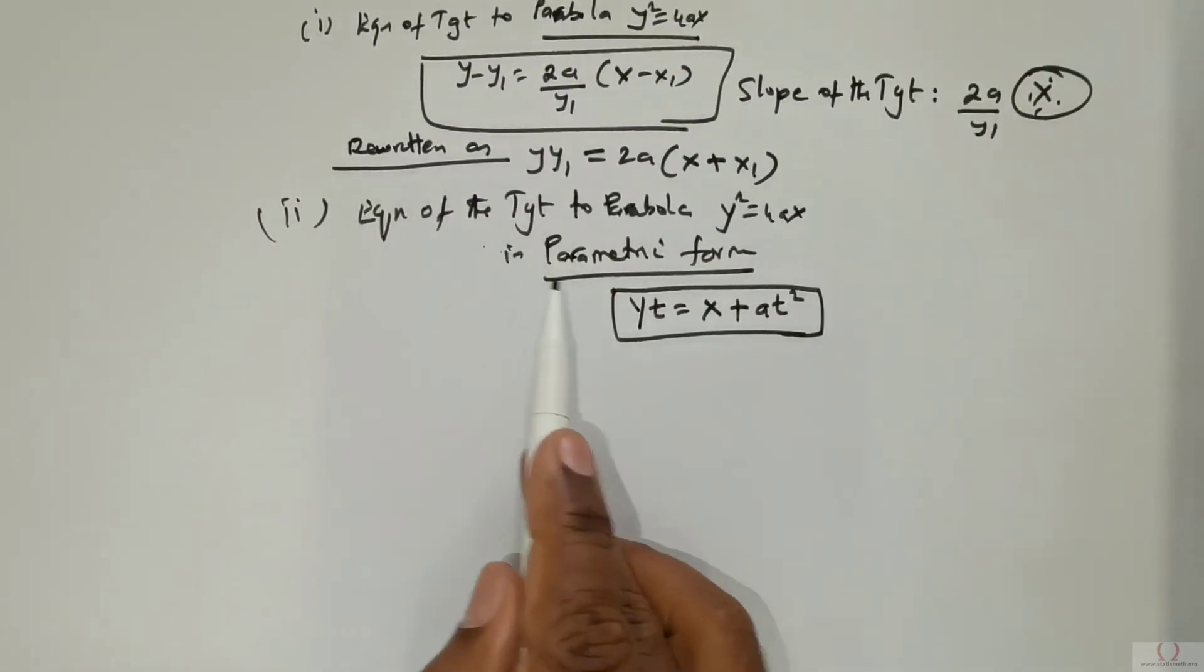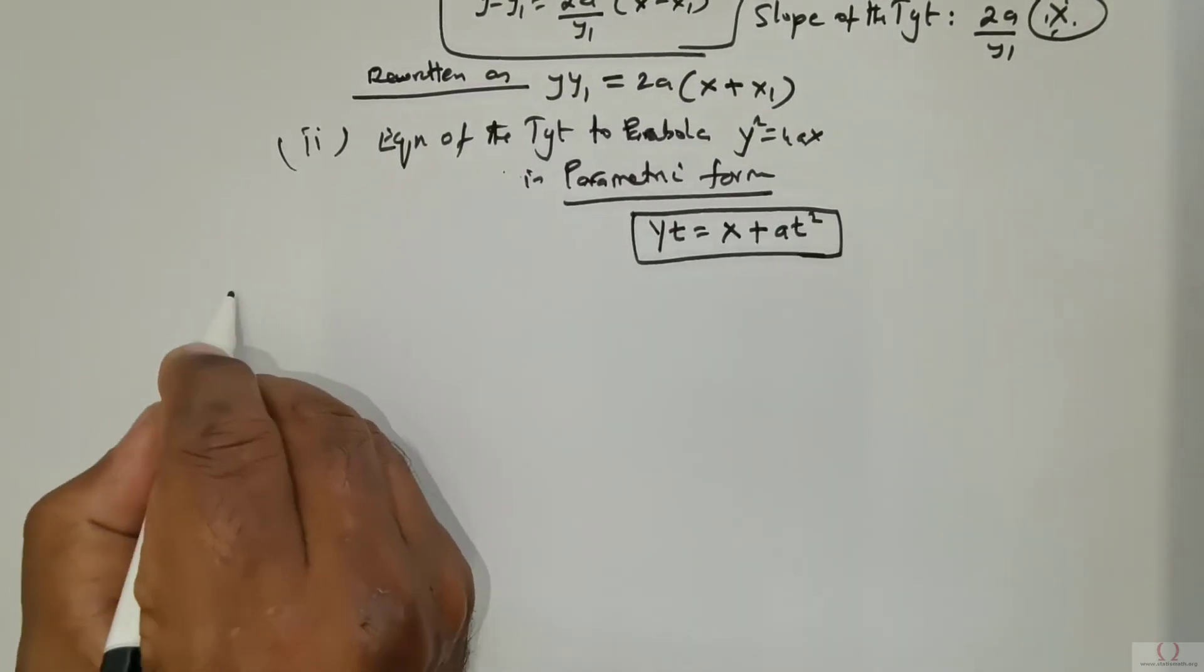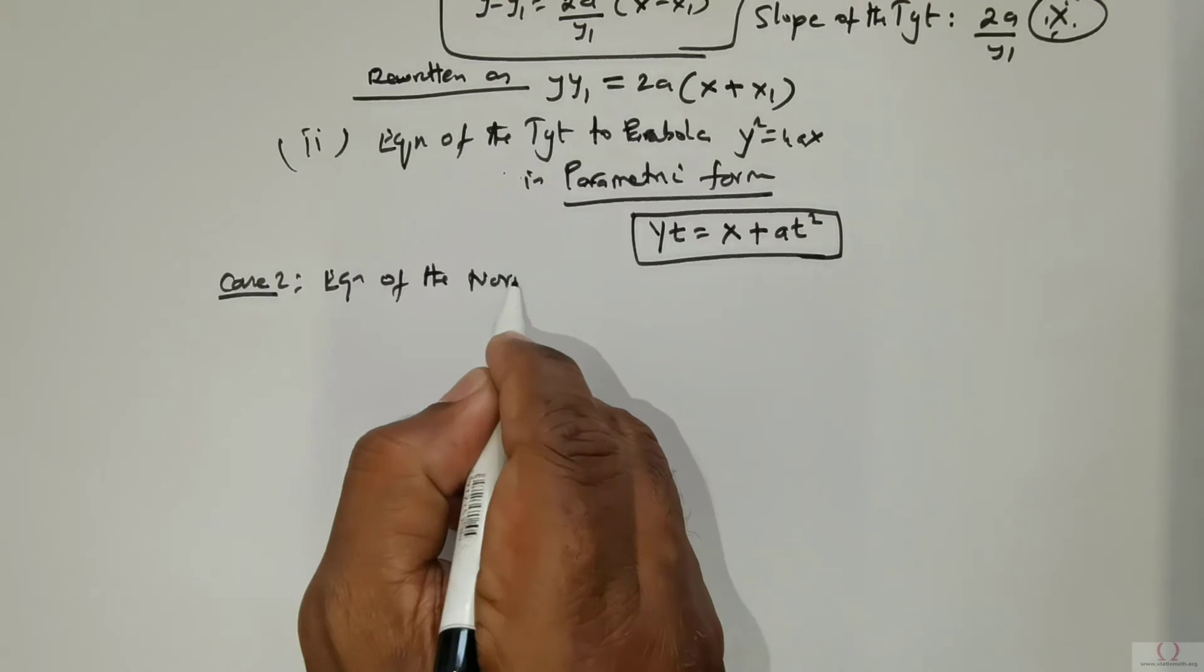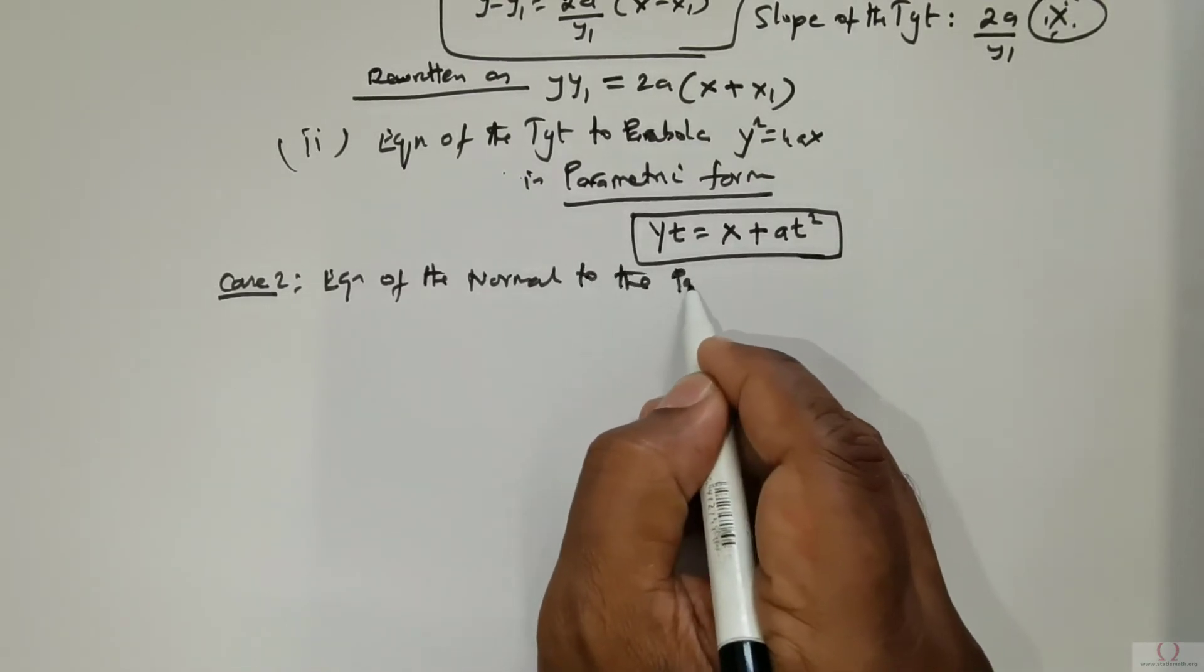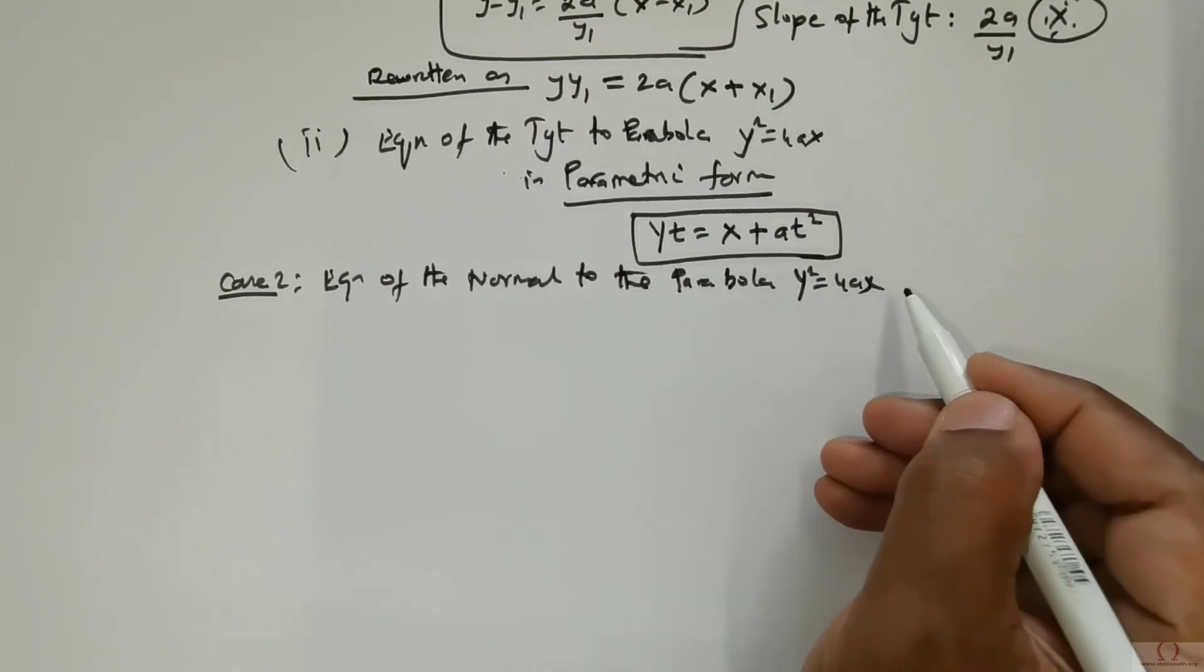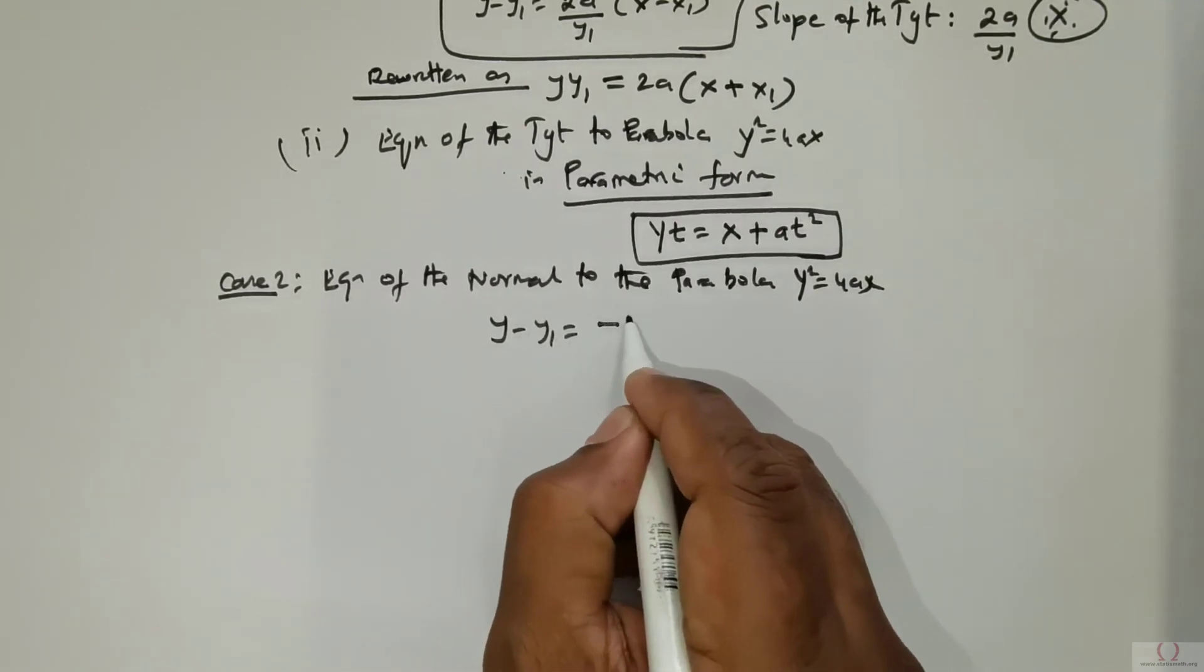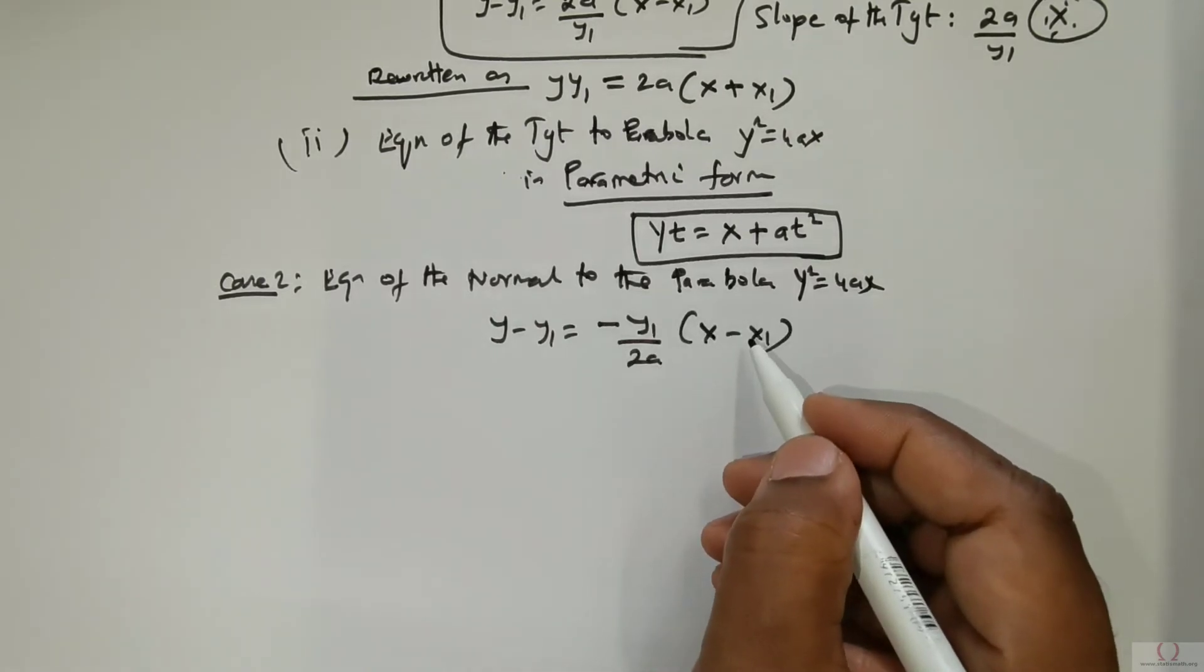Now the next case—Case 2—is the equation of the normal to the parabola y² = 4ax. That equation is given as y - y₁ = -(y₁/2a)(x - x₁). This is very important.